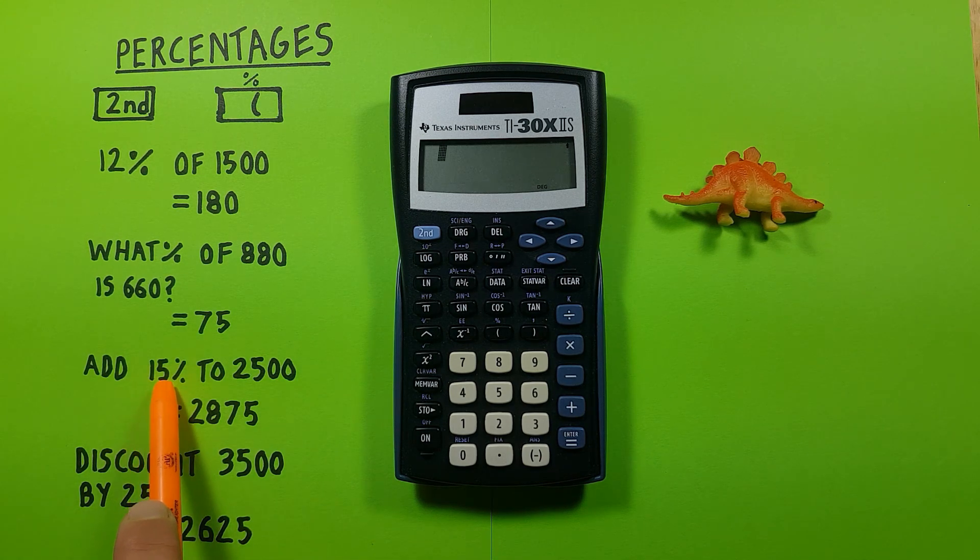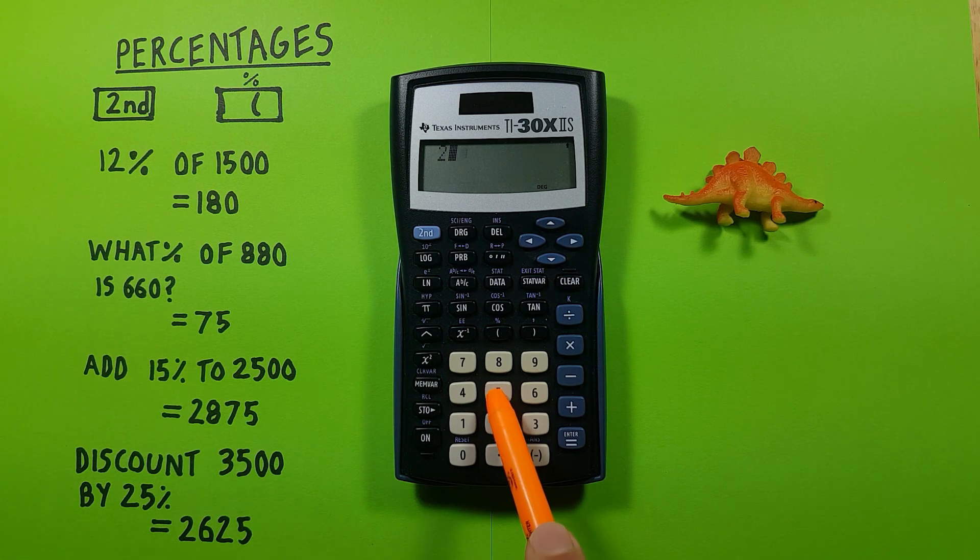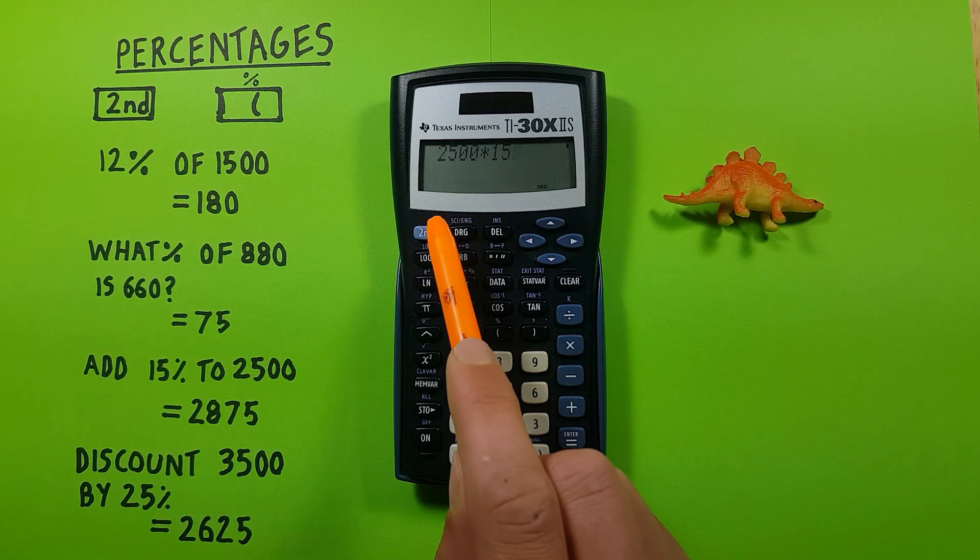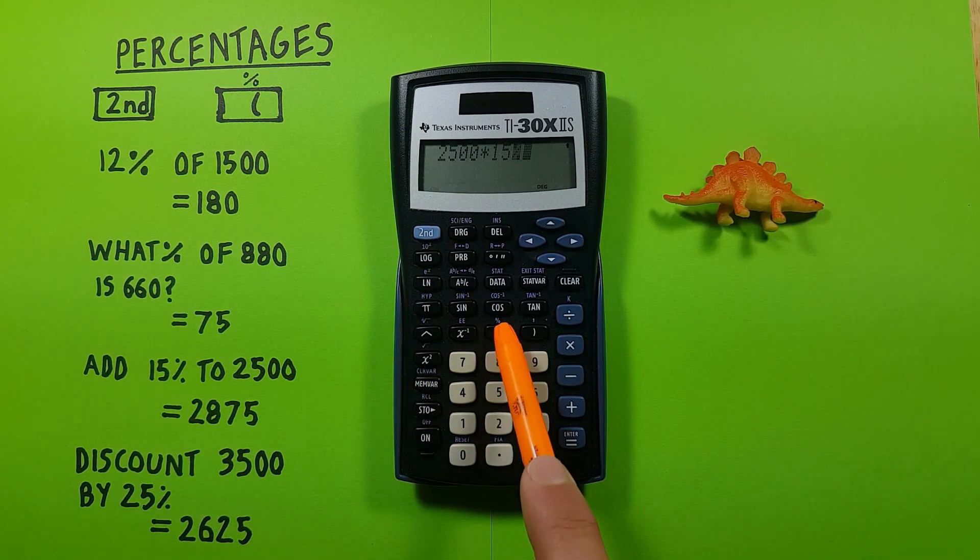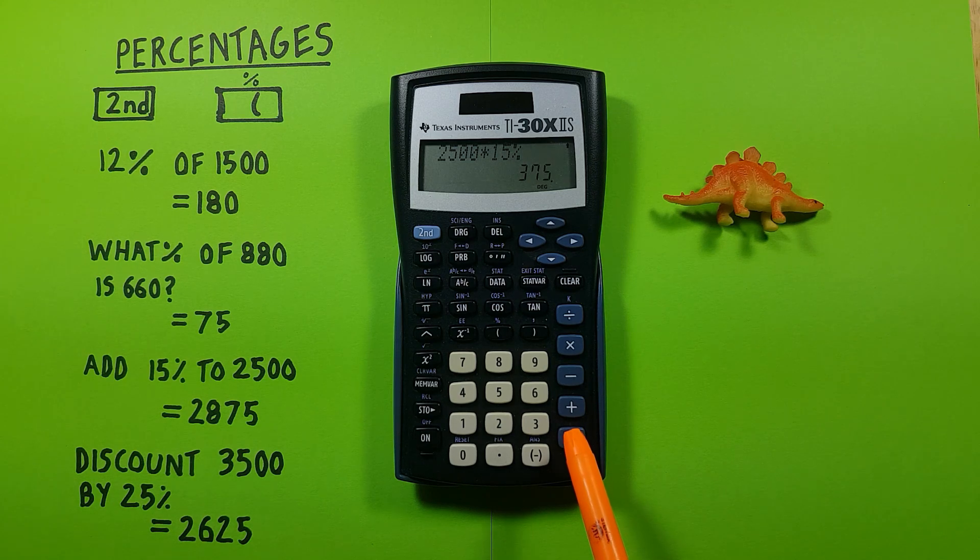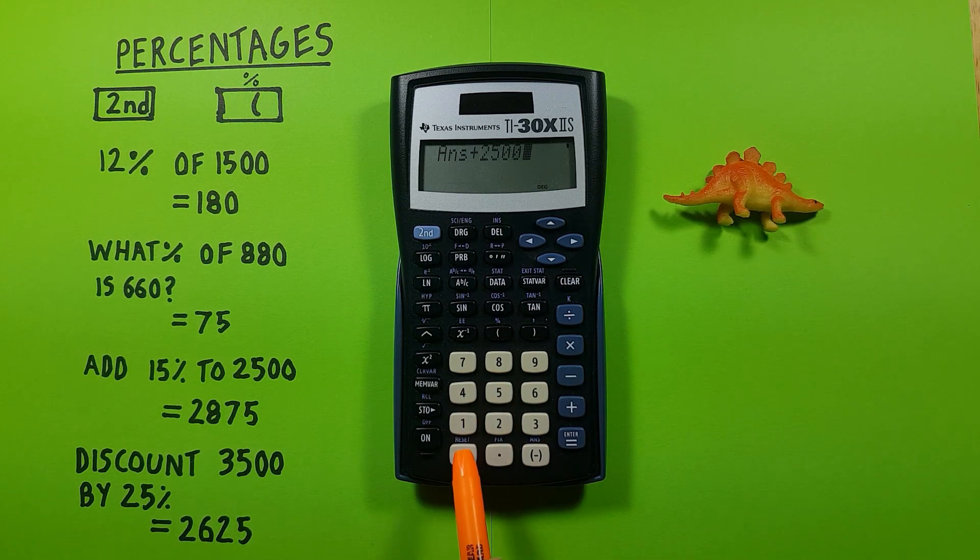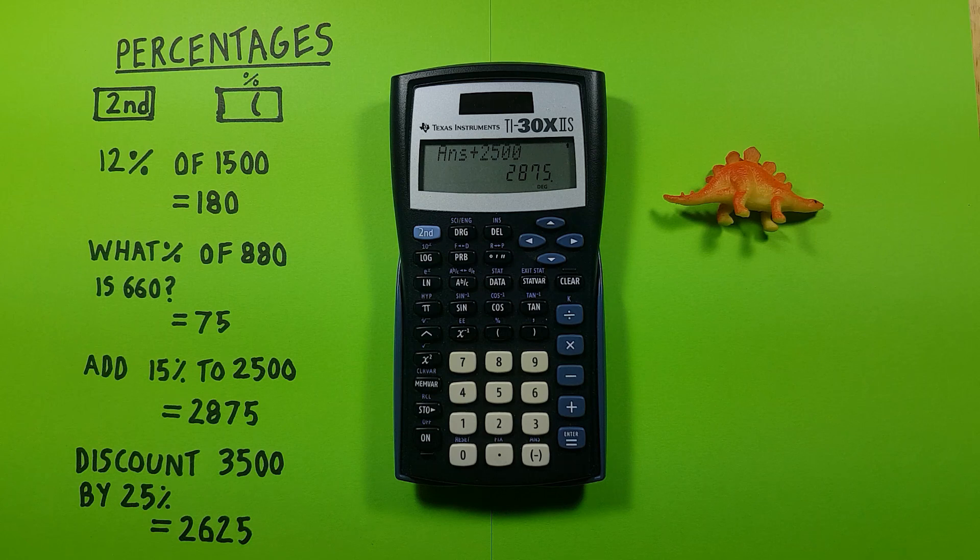For example, if we wanted to add 15% to 2500, let's say there was an item that cost 2500 with a 15% tax on it. You would simply enter 2500 times 15, second function bracket for percent, and then press equals. This gives us 375, which tells us how much 15% of 2500 is, and then we simply add that to 2500 and see our price after taxes.